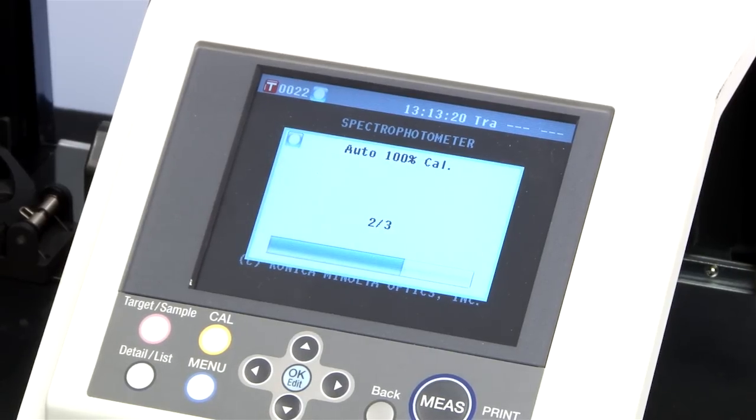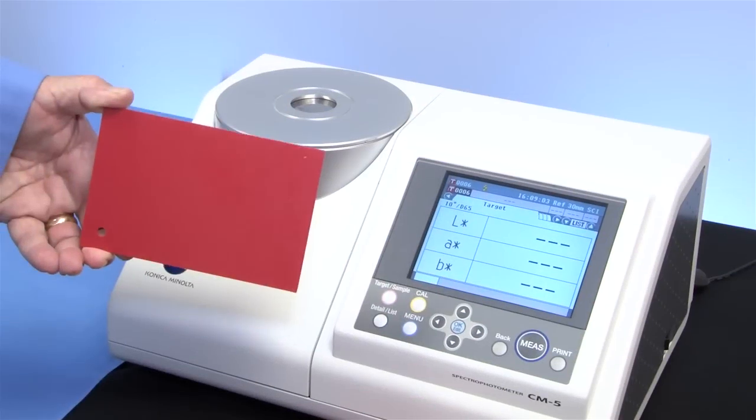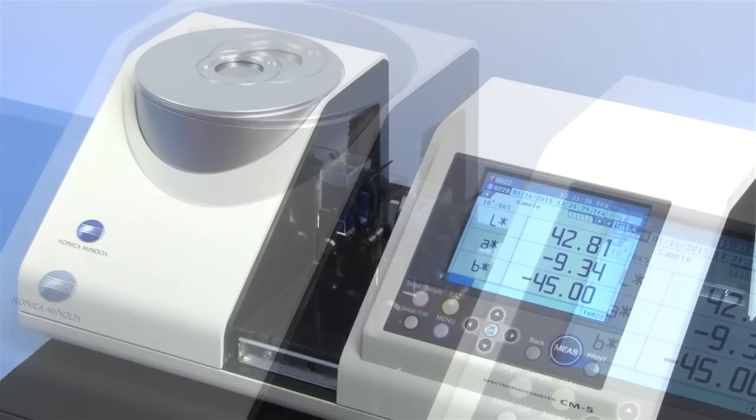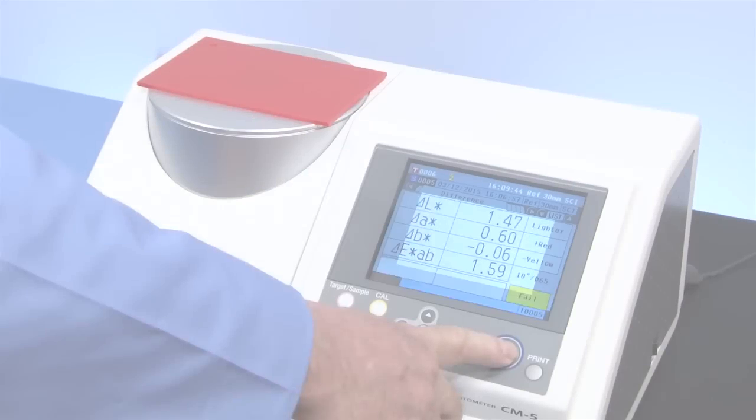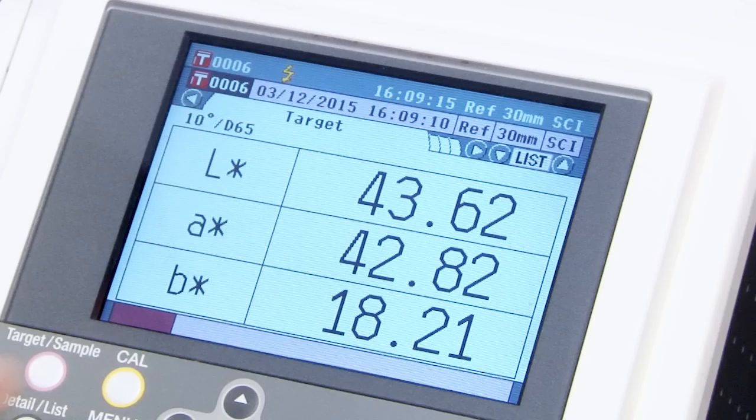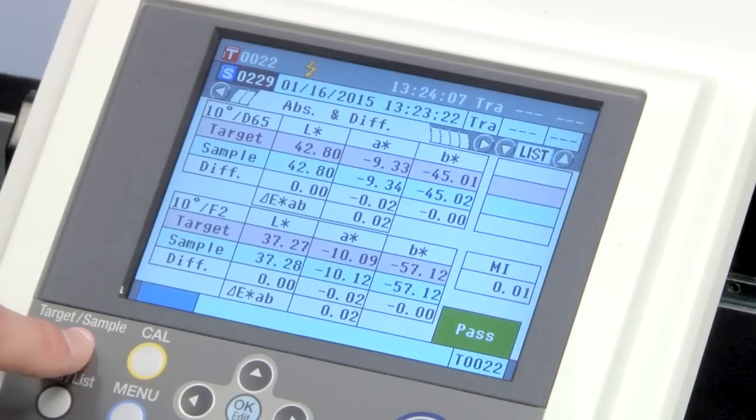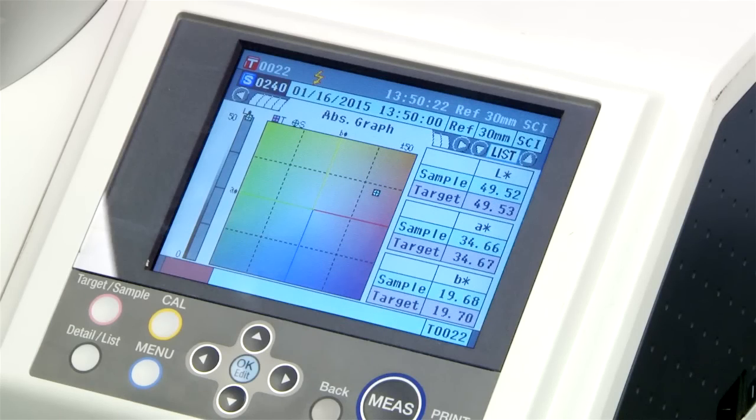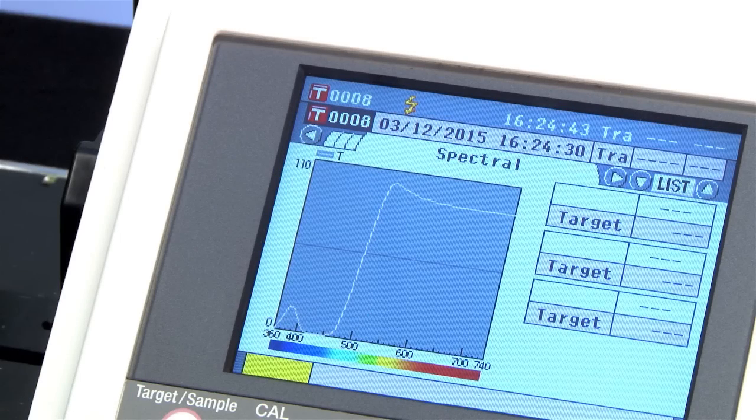After calibration, place your sample on the top port or in the selected transmittance sample holder and press the measurement button. What could be easier? Scroll through a variety of results including LAB color difference, 3D color space, and spectral curve.